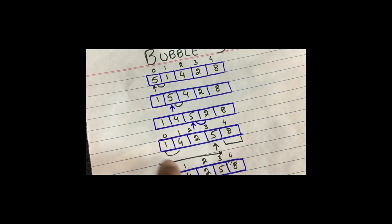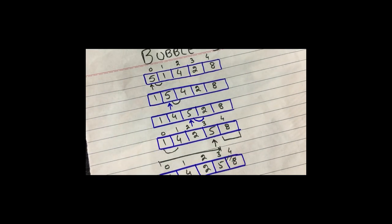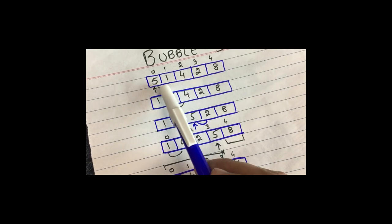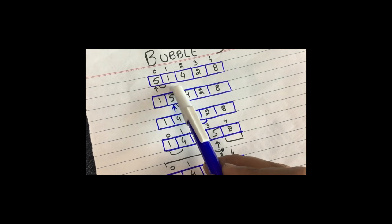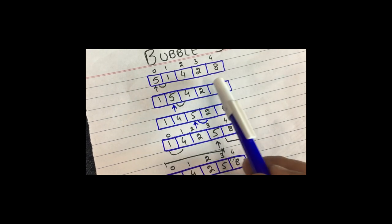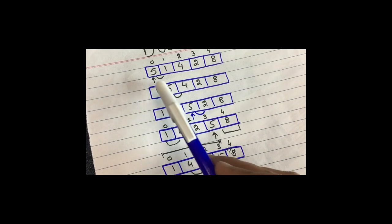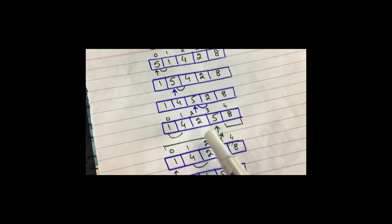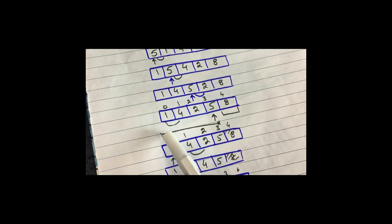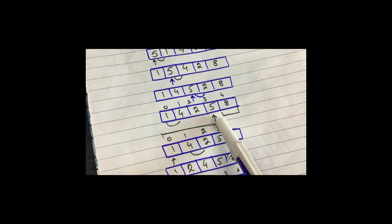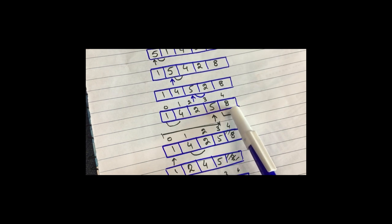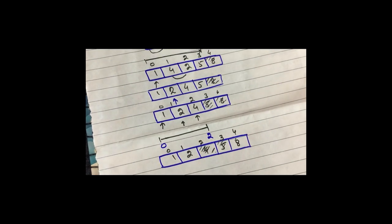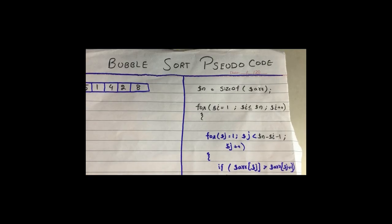Bubble sort starts from index zero, compares two elements, and swaps them according to ascending or descending order. This process continues to the end of the array. At the end of the first iteration, the last element is placed in its correct position. In the next iteration, we run our loop one less than the last index, since the last is already sorted. This continues until the whole array is sorted. Now let's look at the bubble sort pseudocode.